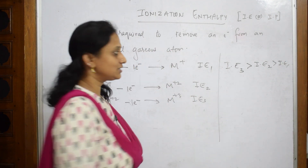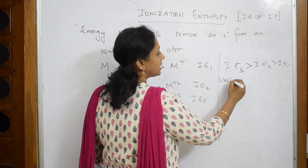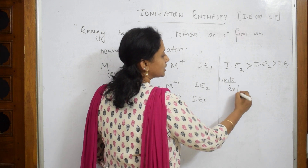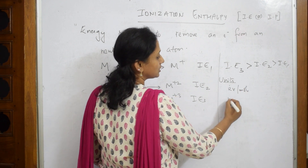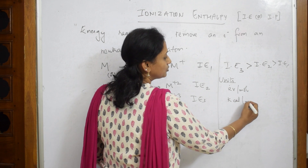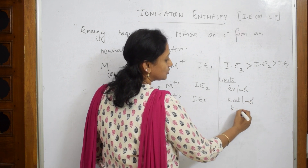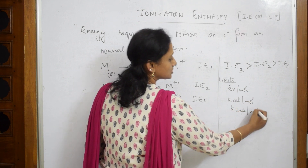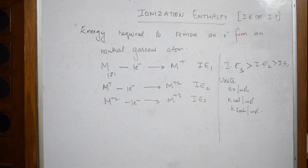The units for measuring ionization enthalpy are electron volt per mole, kilocalorie per mole, or kilojoule per mole.